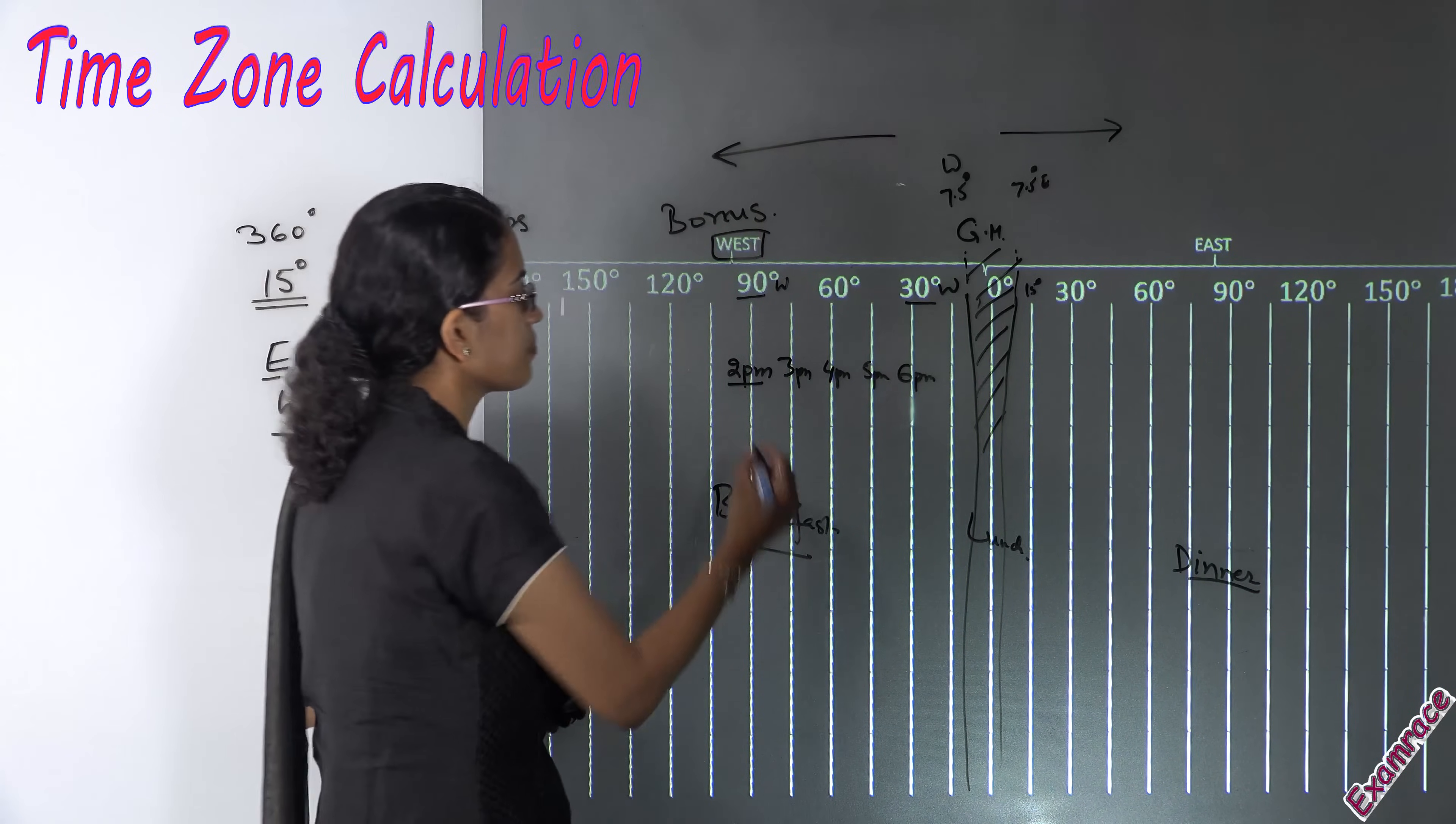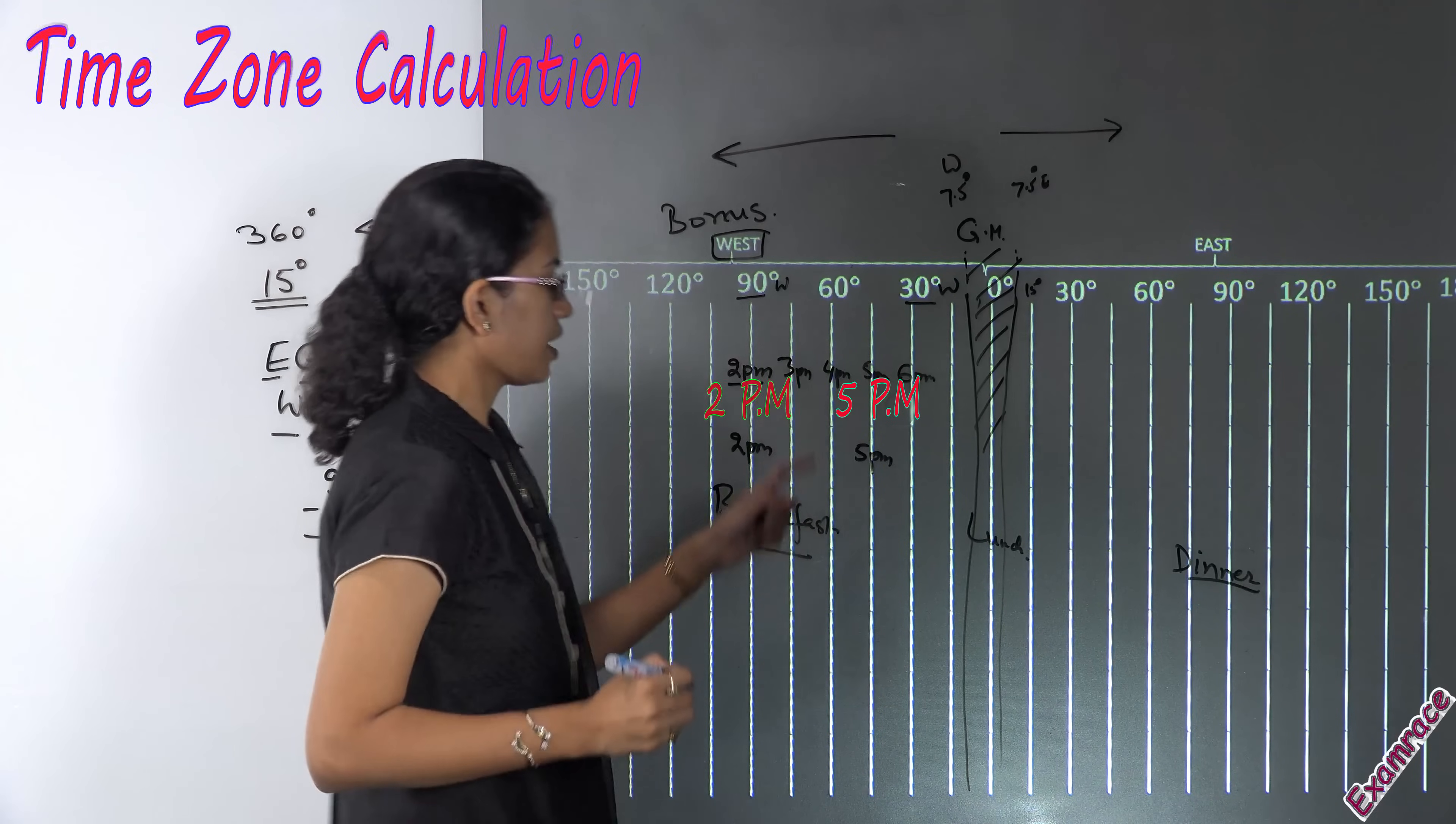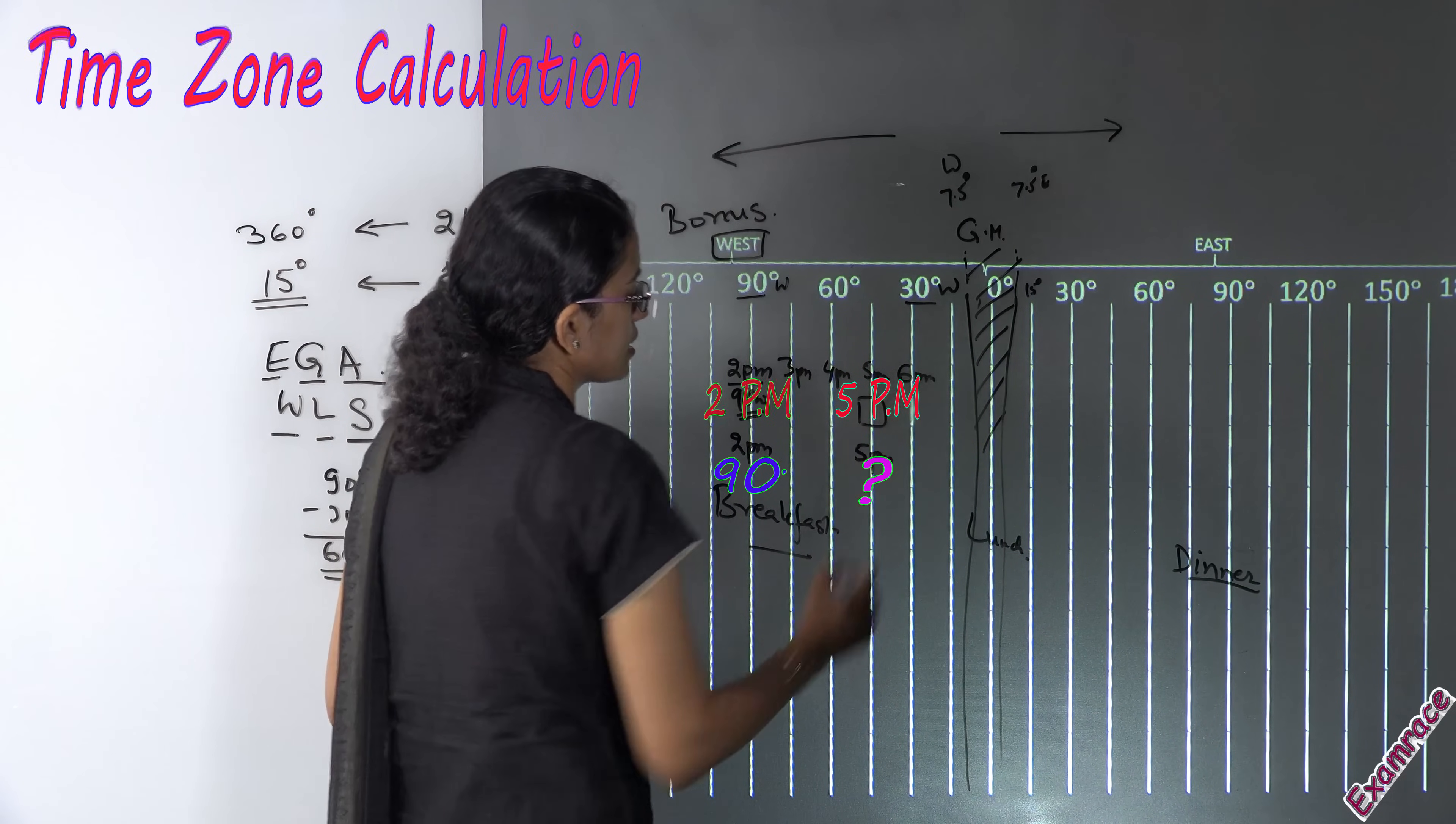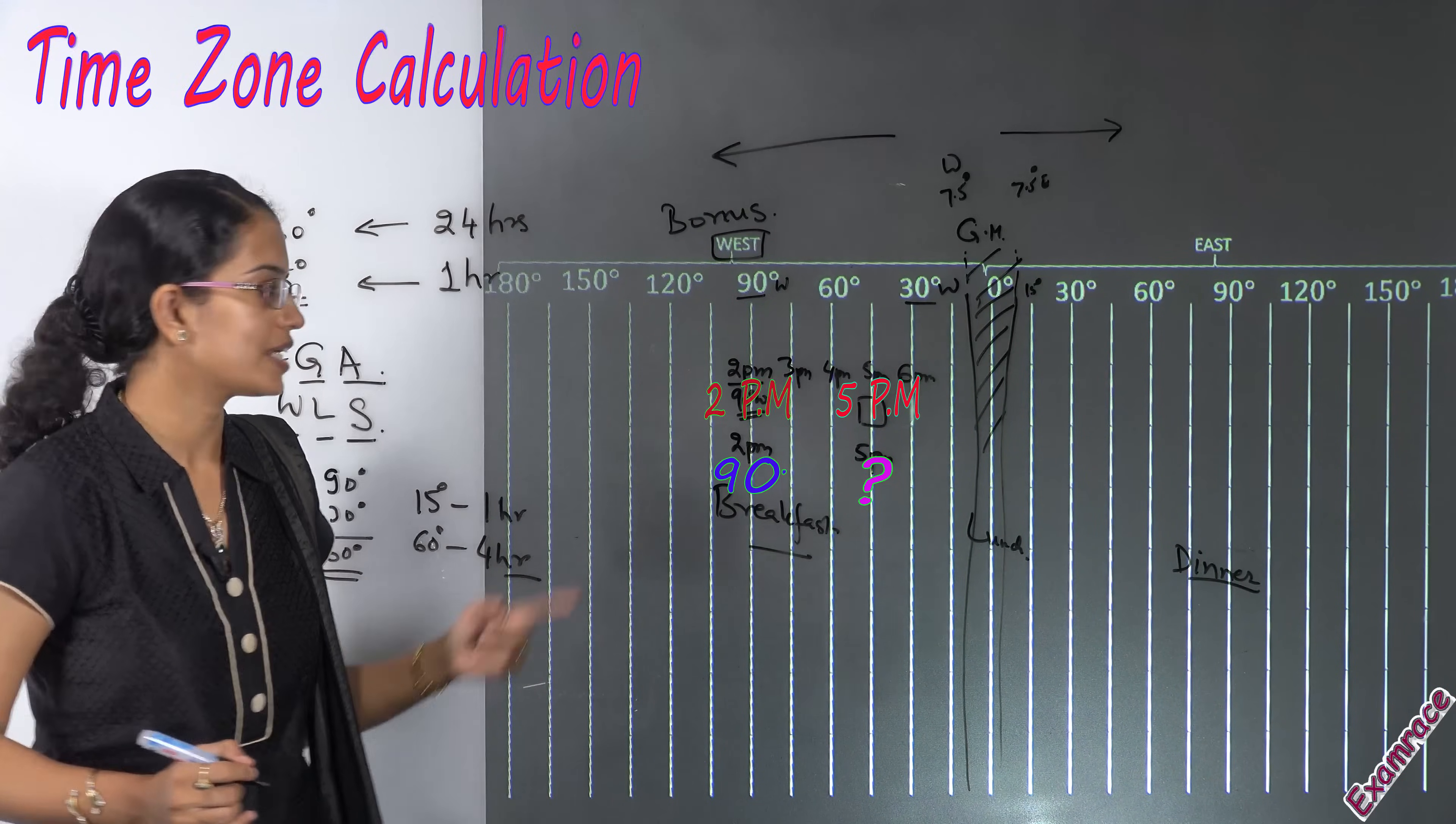The other kind of question could be if the time here is 2 PM and time on this latitude is 5 PM. If I know the time where you have 2 PM at 90 degrees west, what would be the longitudinal extension at the time where the time is 5 PM. Again how do I calculate it?